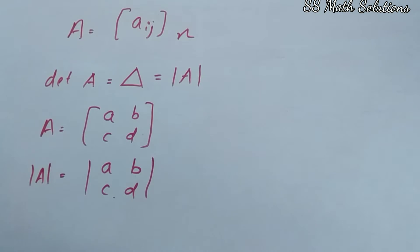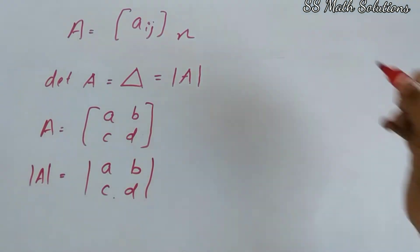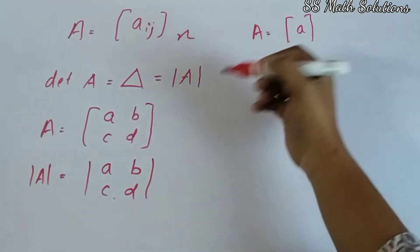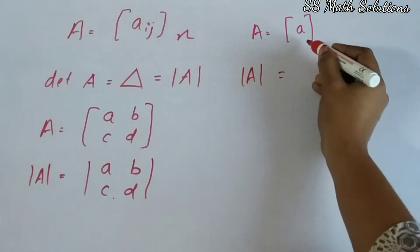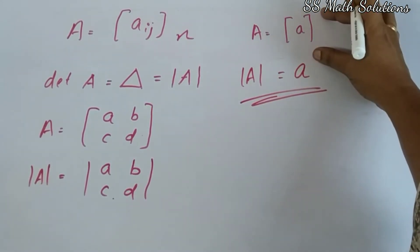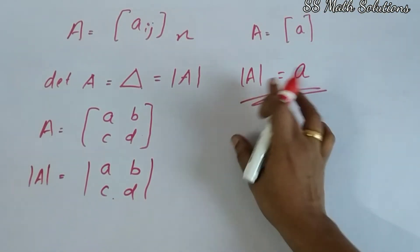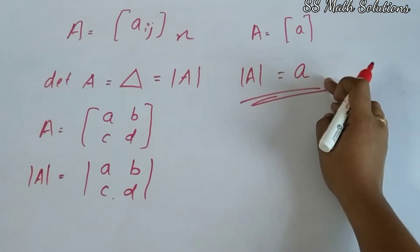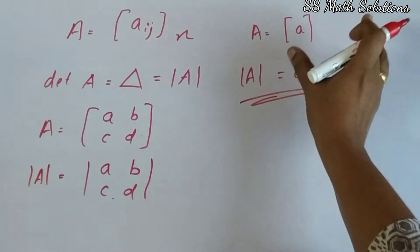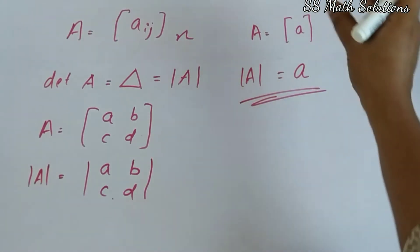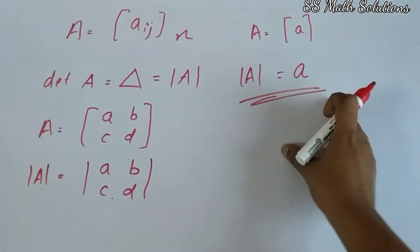Now we are going to check how to find the determinant of a matrix of order 1. A matrix A of order 1 has only one element. So the determinant of this is A itself — the same element you will get as the determinant.